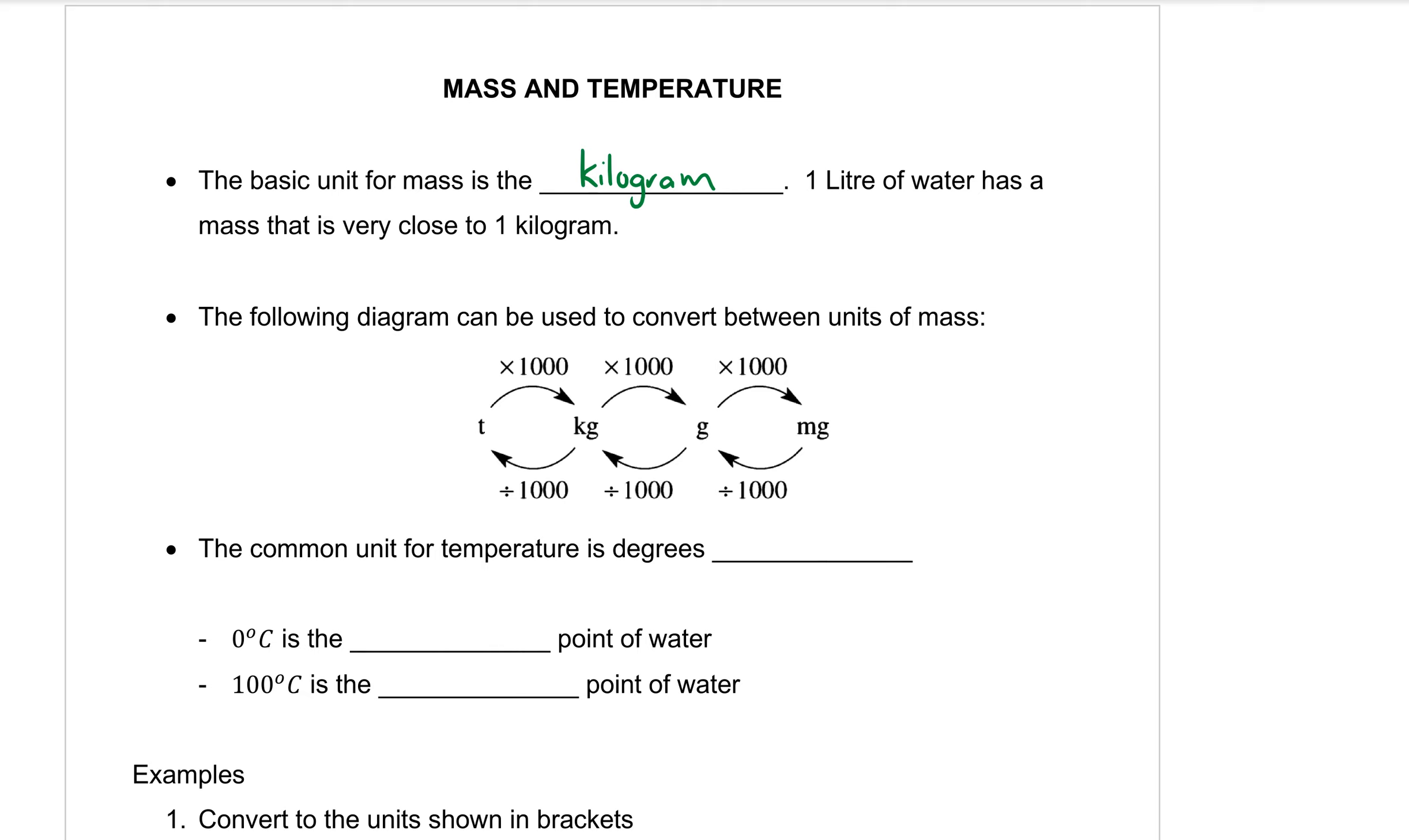The following diagram can be used to convert between units of mass. The good thing about this is that they're all thousands. We did one of these diagrams early in the topic where we're converting between units of length and we had tens and hundreds and thousands, but for mass they're always thousands. As you're going from a big unit to a smaller unit you times by a thousand, and from small units to bigger units you divide by a thousand.